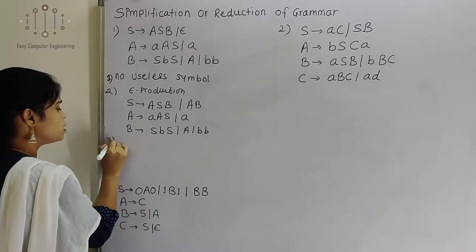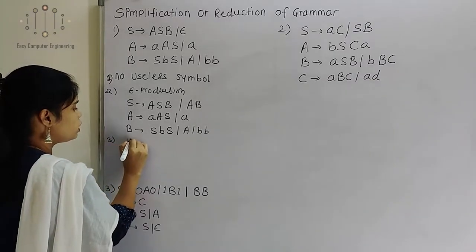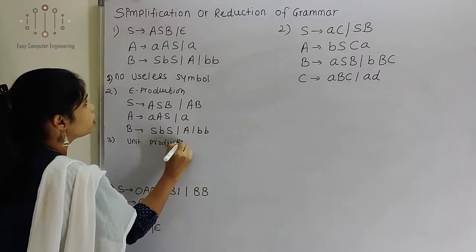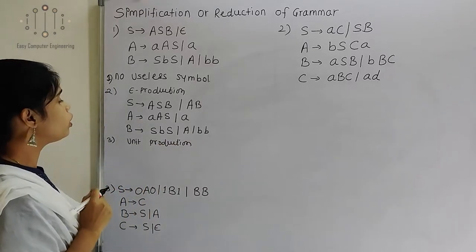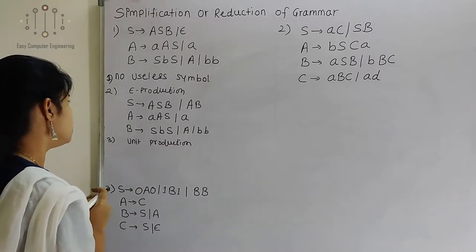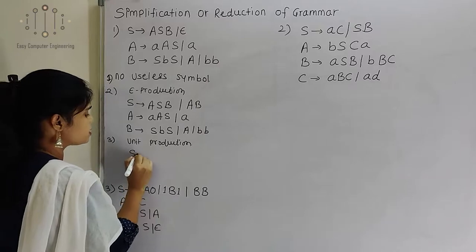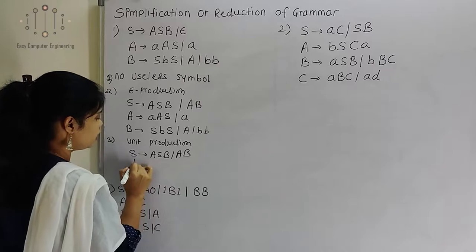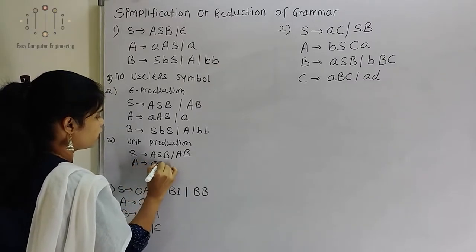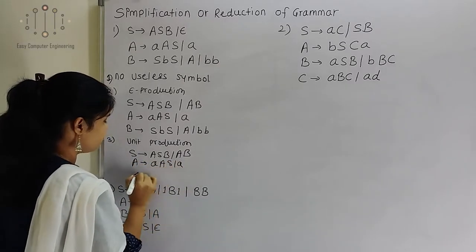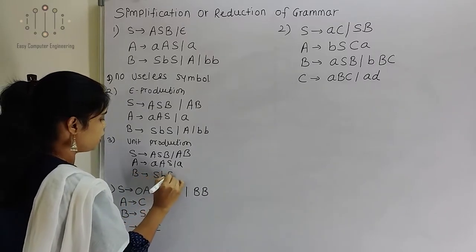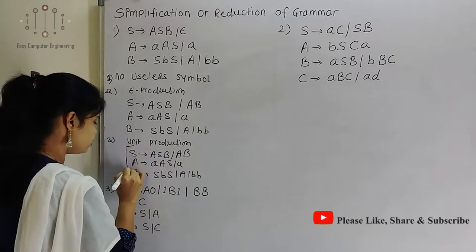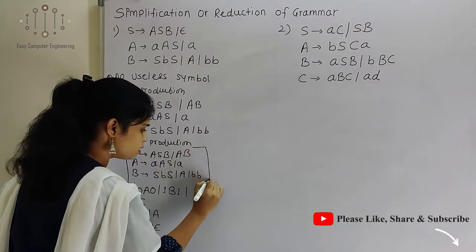Now the third step is removing unit production. In this grammar there won't be any unit production. So the final answer is: S tends to ASB, AB; A tends to AA, SA; and B tends to SBS, ABB. This is our final answer after simplification.